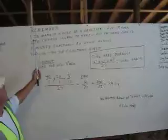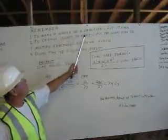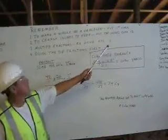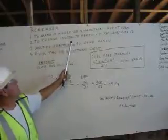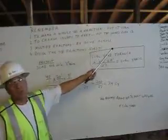Remember, number one, to make a whole number of fractions, put it over one. Number two, to change inches to feet, put the inches over twelve.